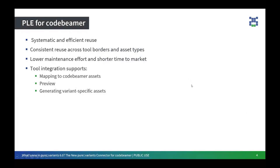First off, systematic and efficient reuse. When we have systematic and efficient reuse, it leads to high use rate and lesser errors. Secondly, consistent reuse across the tool borders and asset types. While using product line engineering for CodeBeamer, you can have consistent reuse of all of your assets throughout the different tools that you're using. This leads to lower maintenance and therefore a shorter time to market.